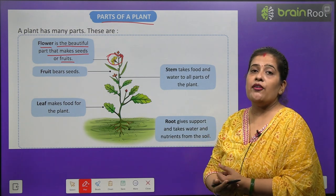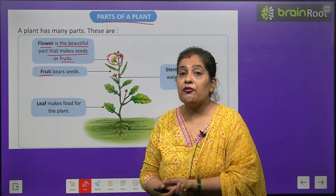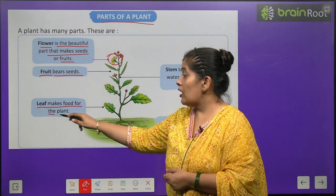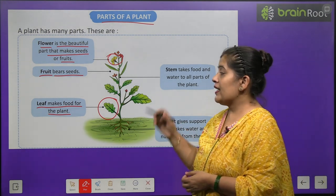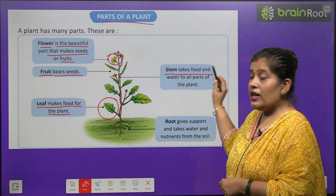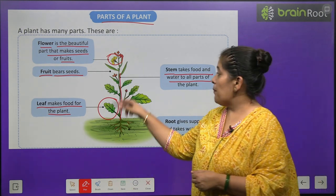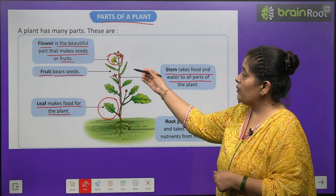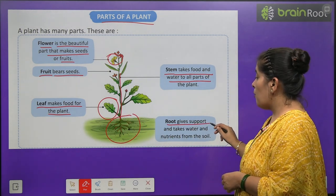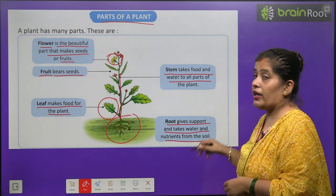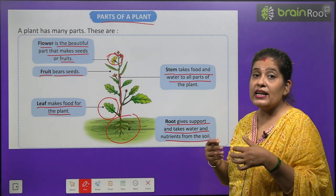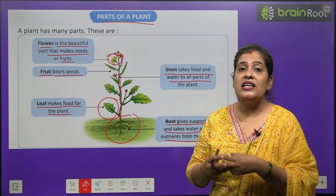A flower converts into either a fruit or seeds. Fruit — fal — bears seeds. Beej hote hain fal mein. Leaf — patti — leaves make food for the plant. Patti kya karti hai? Ped ke liye khaana banati hai. Stem — tana — stem takes food and water to the parts of the plant. Stem ka kaam hai paani aur khaana plants ke different bhaagon mein pahunchana. Root — jad — is underground. Root gives support and takes water and nutrition from the soil. Root kya karti hai? Paudhe ko support deti hai aur mitti mein se upyogi khanij lavan hasil karta hai, jisse ek paudha jivit rehta hai.